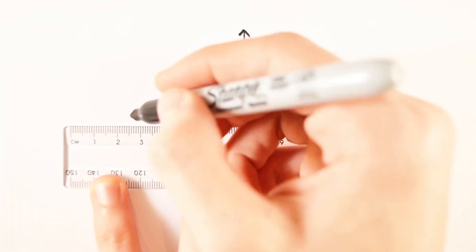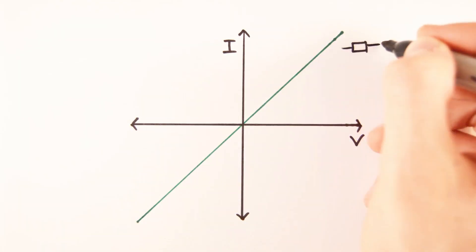We can plot these readings on a graph to show how the voltage varies with the current. The current flowing through a fixed resistor is directly proportional to the voltage across it.